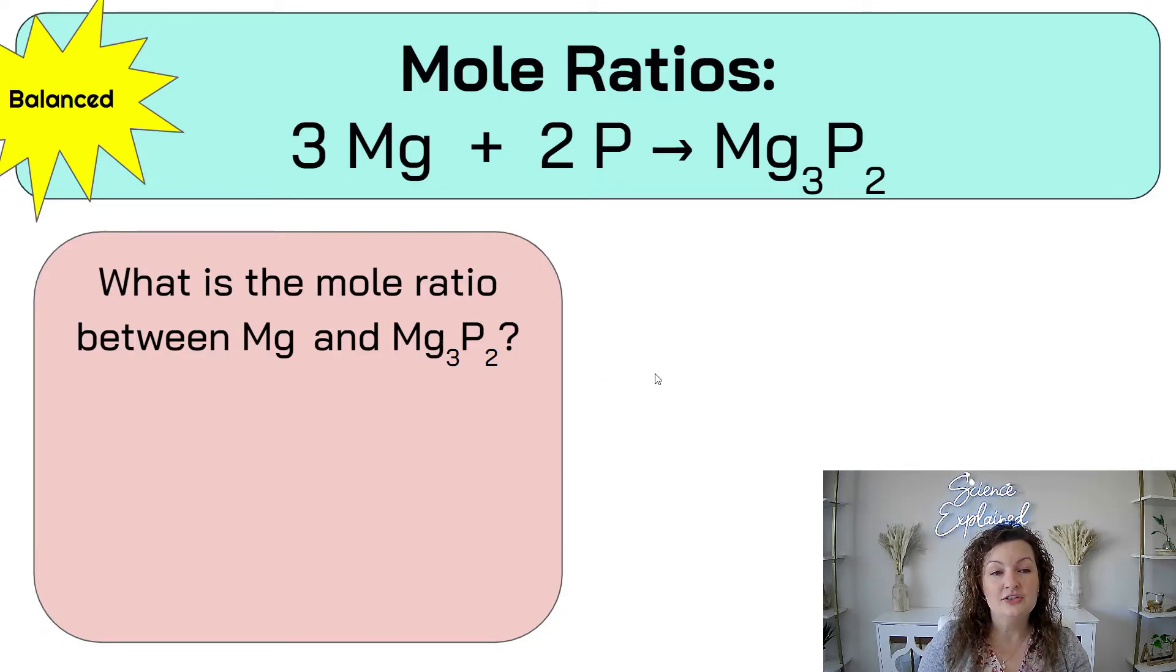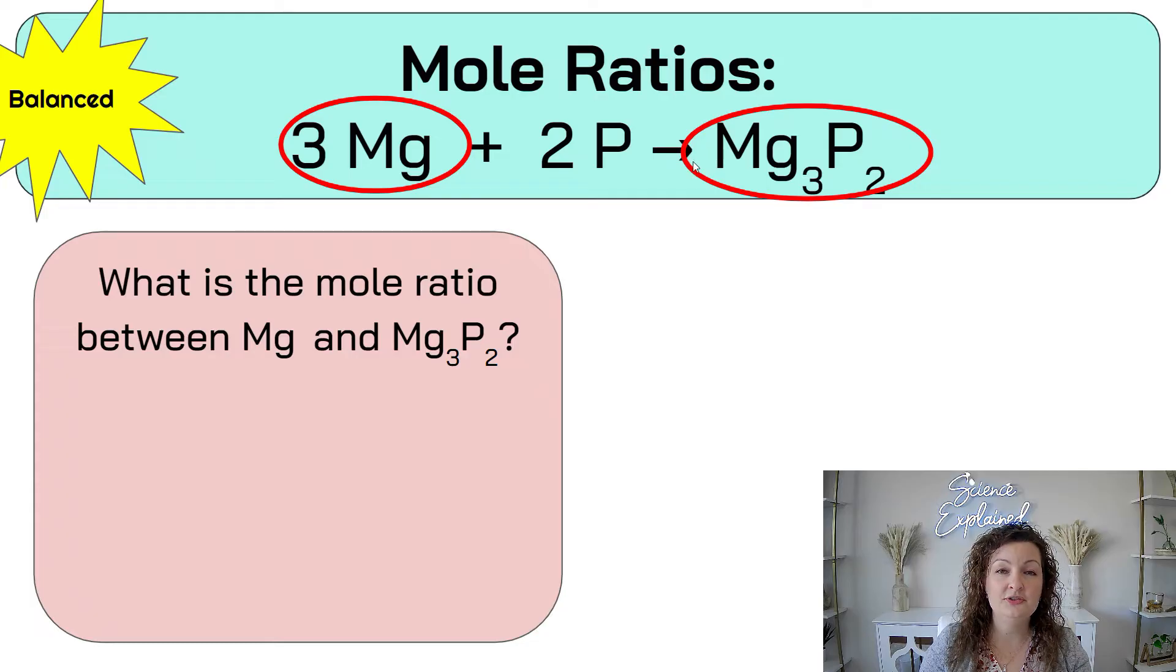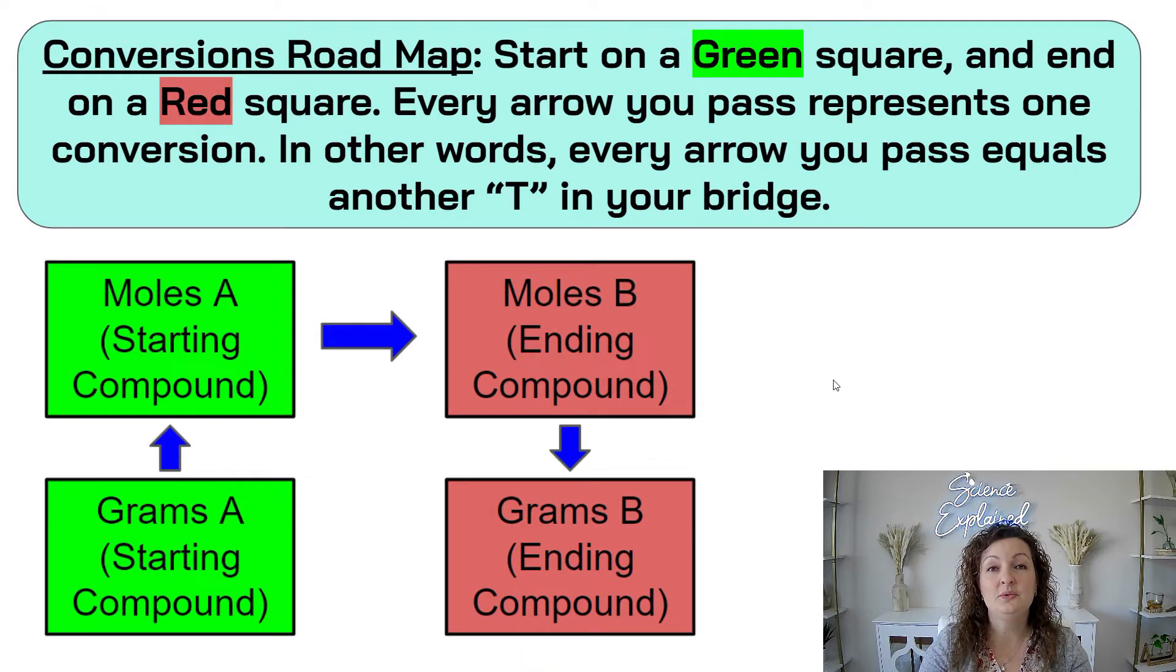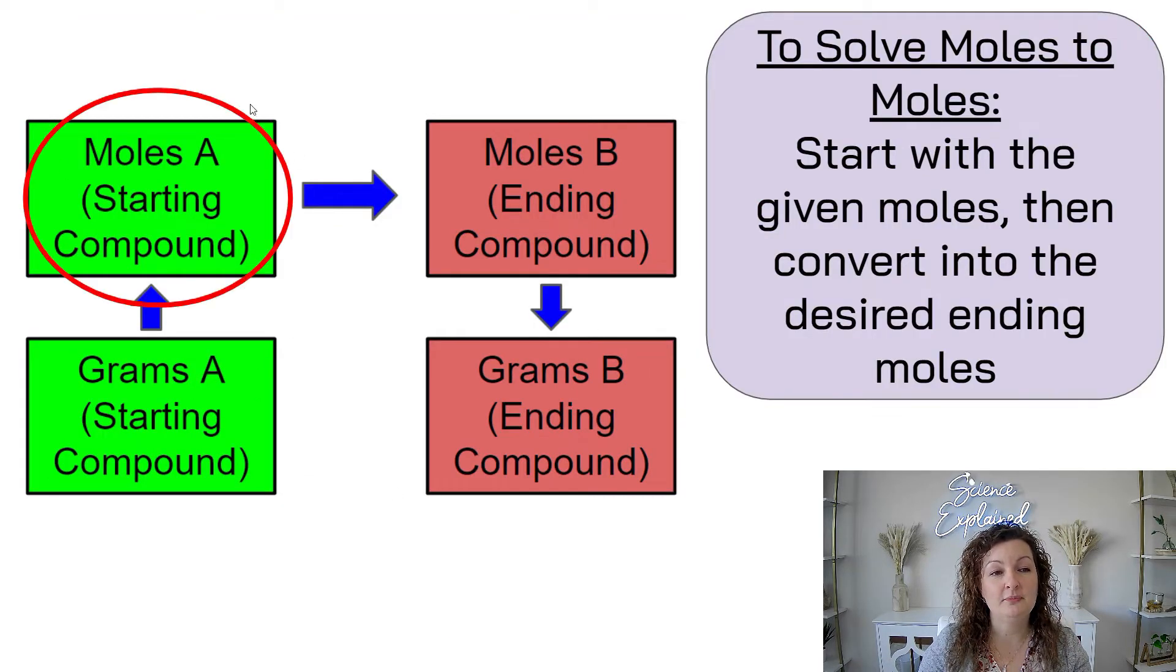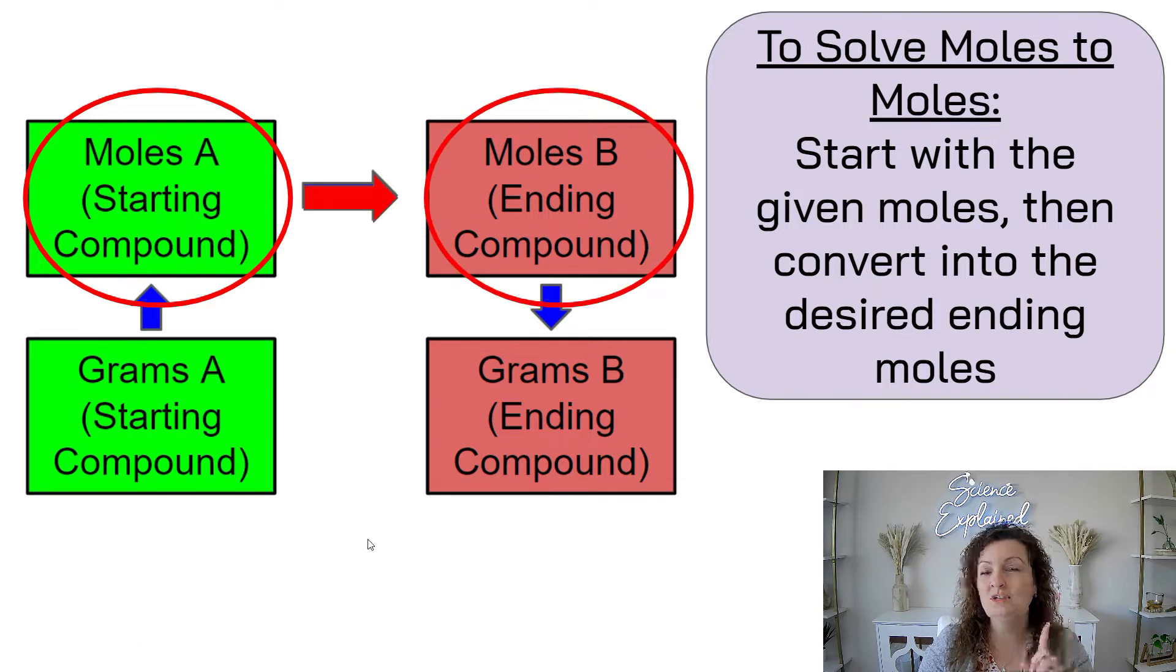All right, one more. Check and see if this is balanced. Go ahead and pause it. Okay, and this one is balanced. Now let's look at our question. What is the mole ratio between MG and MG3P2? Go ahead and pause this and see if you can get it right. All right, let's look at our answer. So MG is right here and we have 3, and then MG3P2 is right here. There's nothing in front of this one, which means it's an understood one. So our ratio is going to be a 3 to 1 ratio. And remember, when needed, we can turn them upside down and flip-flop it for our bridge.